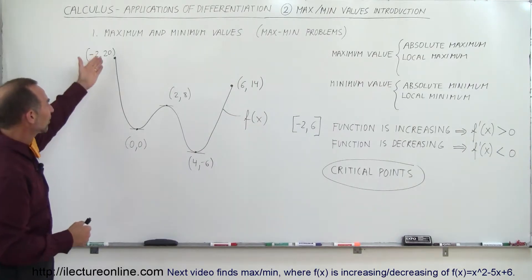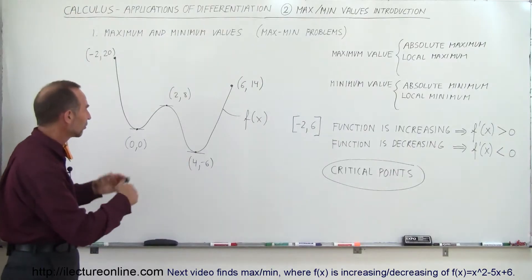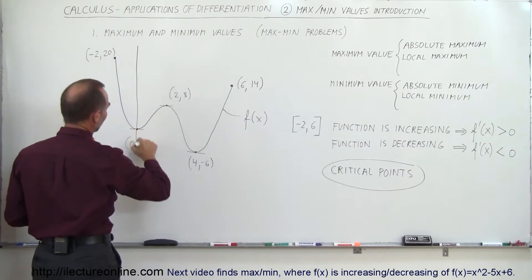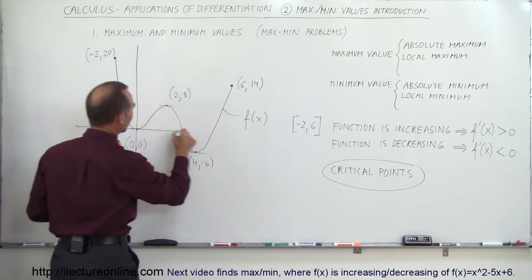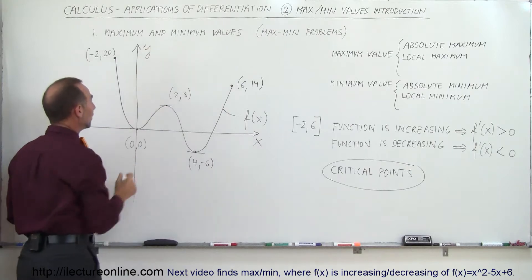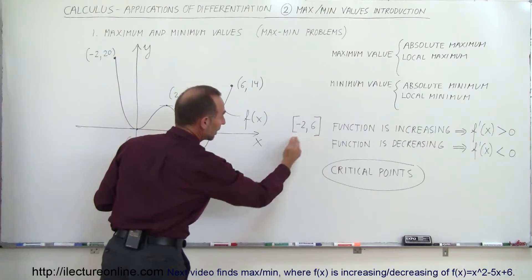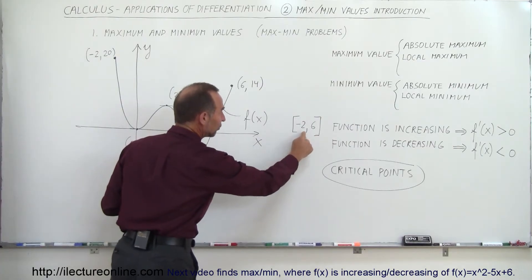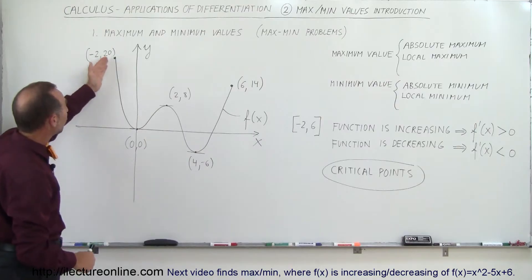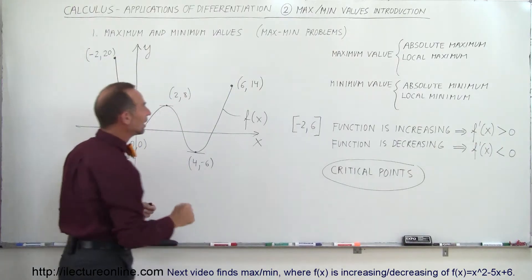Here we have a segment of a function, f of x, which means there's a relationship between x values and y values. If we draw an axis on that, we have the y-axis and the x-axis. Notice that the function is delineated between negative 2 and 6 — this is the domain from x equals negative 2 to x equals 6. When x is equal to negative 2, y is equal to 20, and when x is equal to 6, y is equal to 14.